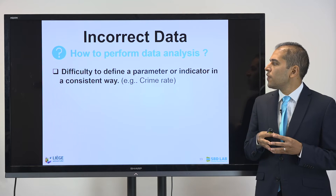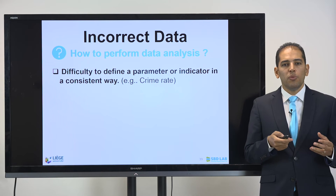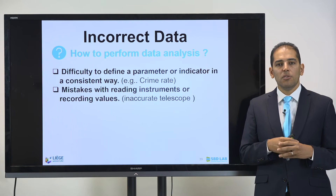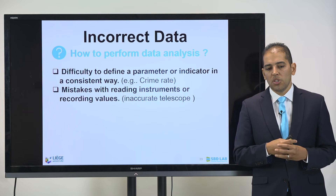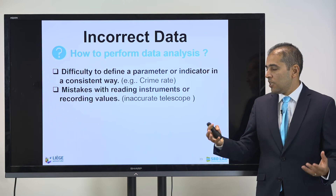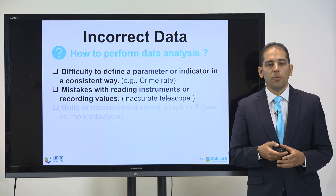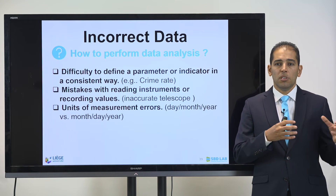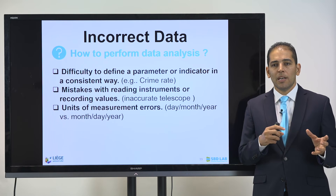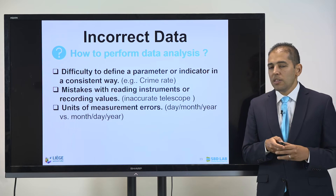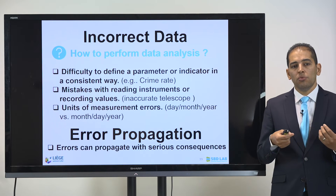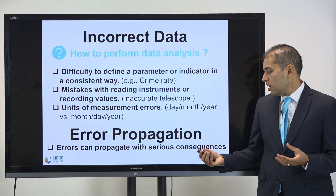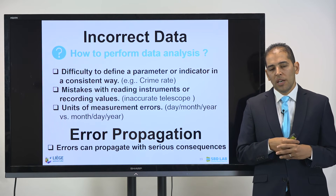We have difficulties defining parameters or indicators in a consistent way — problems can arise with crime rates for example. There can also be mistakes with reading instruments or recording values: sometimes the instrument is placed wrong, not in the right position or best functional operation. Inaccurate readings can result. Sometimes units of measurement are wrong — mixing British and international units, or confusing day, month, and year. It is very important to check error propagation, as errors can be propagated with serious consequences.